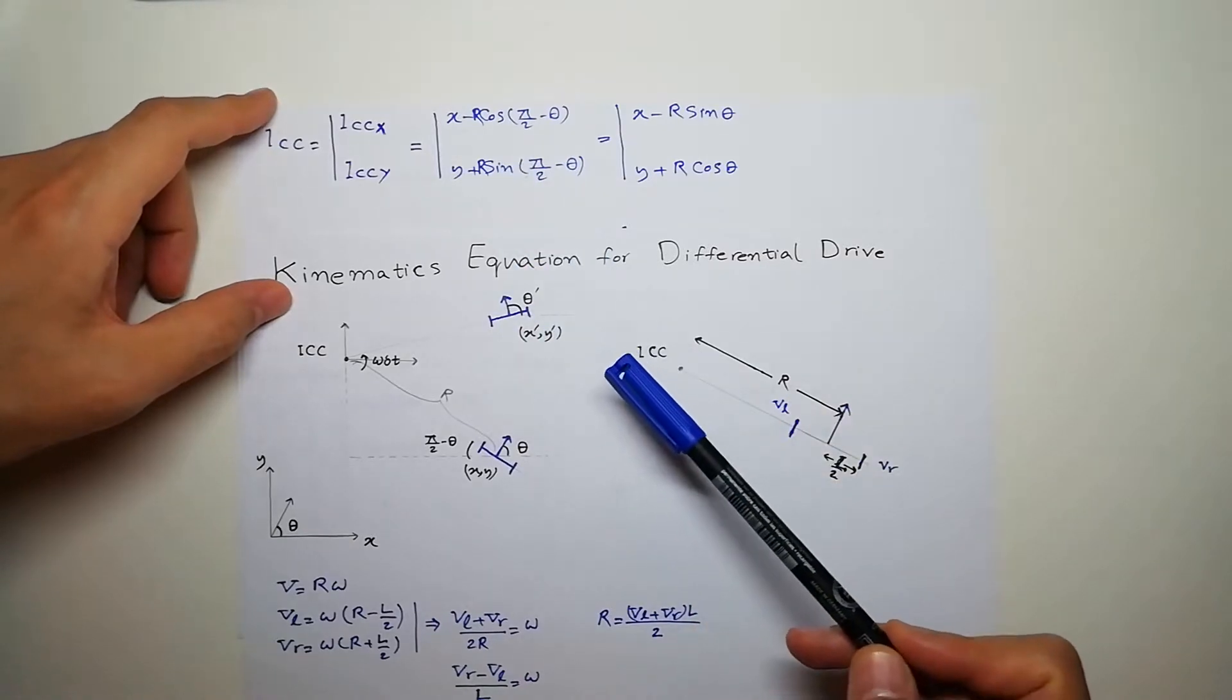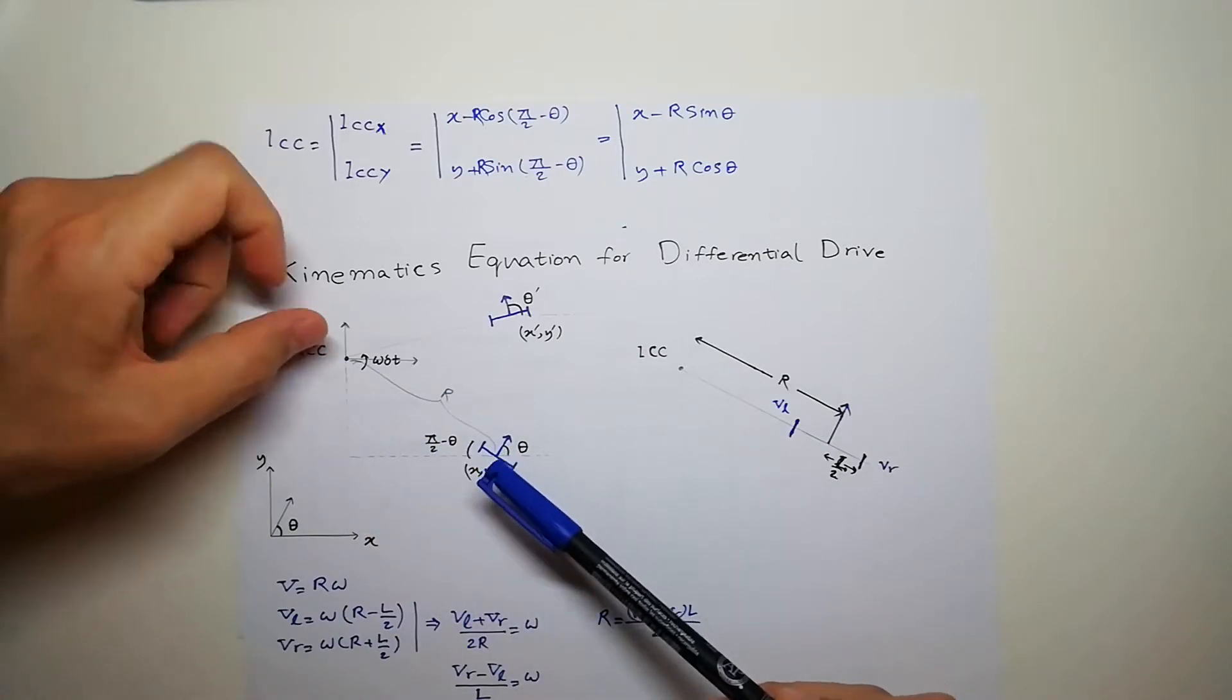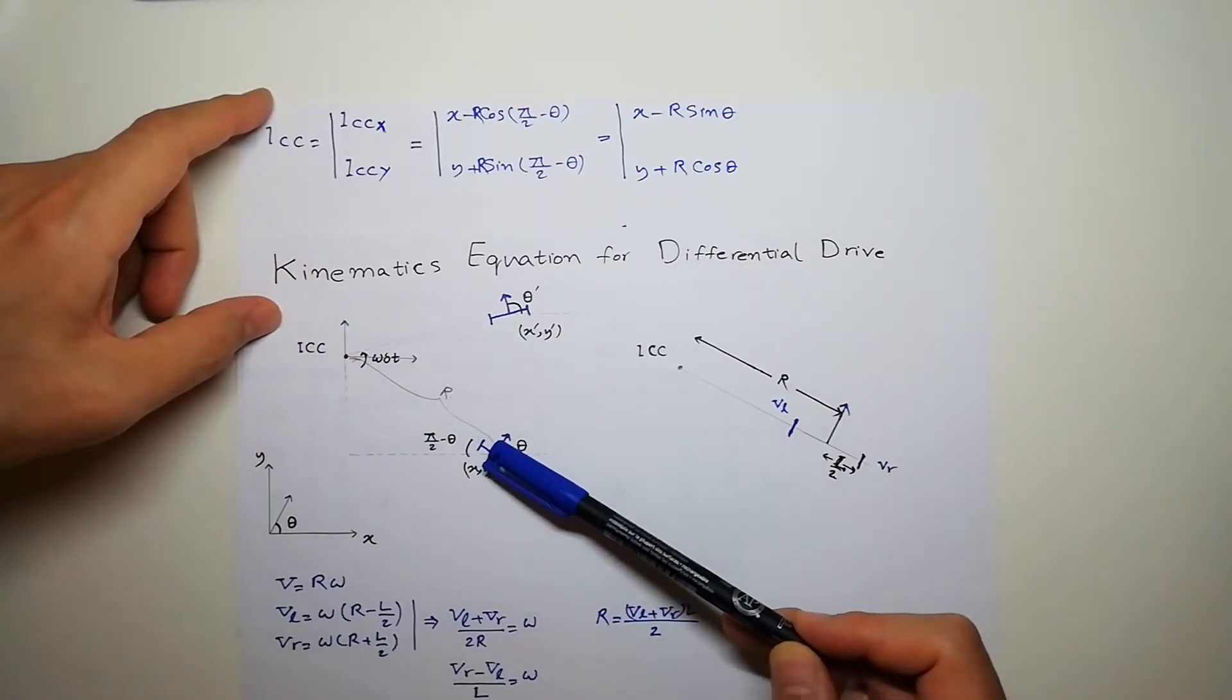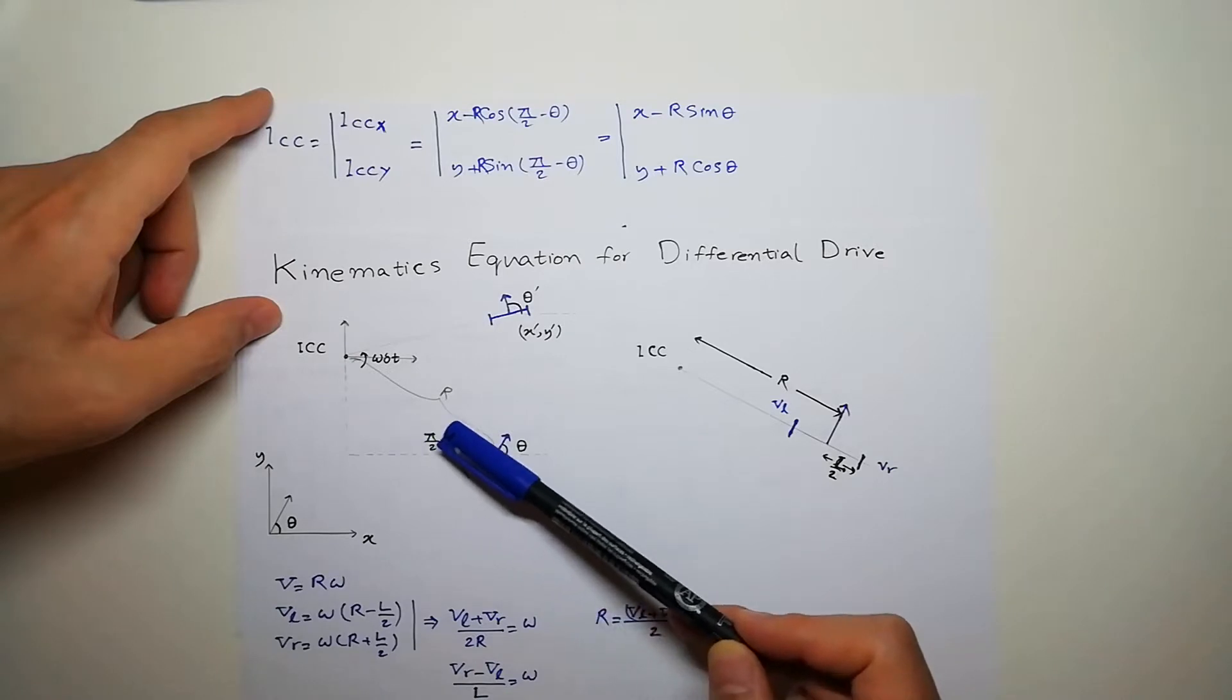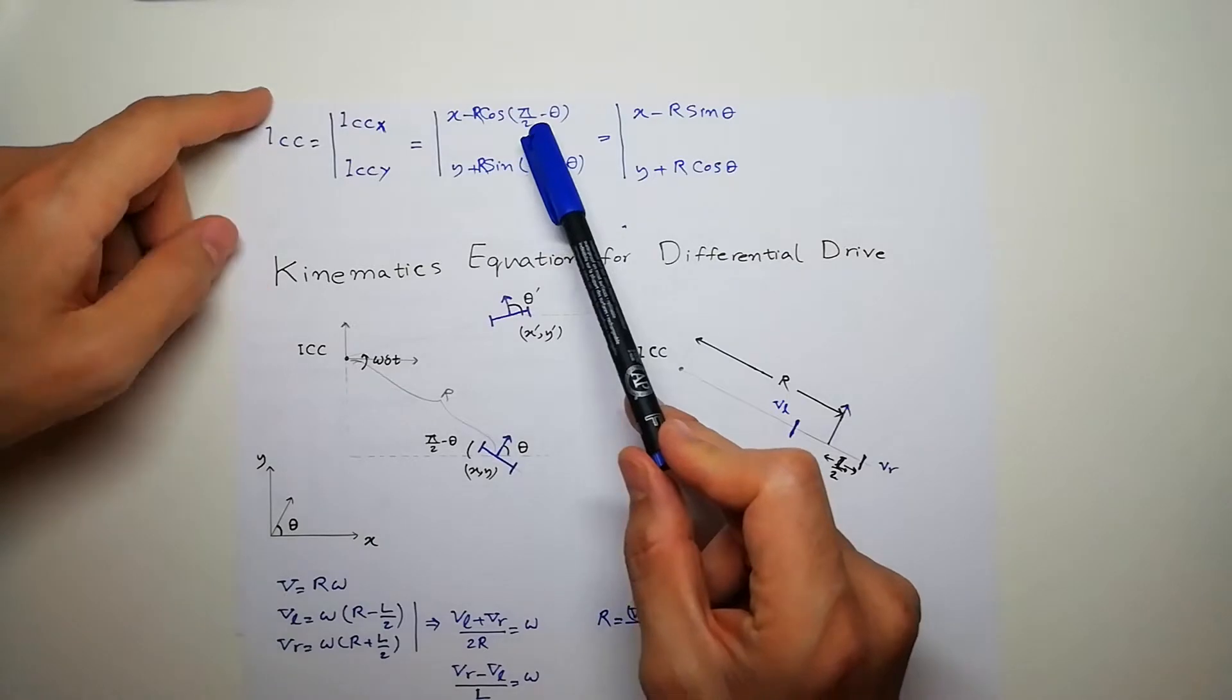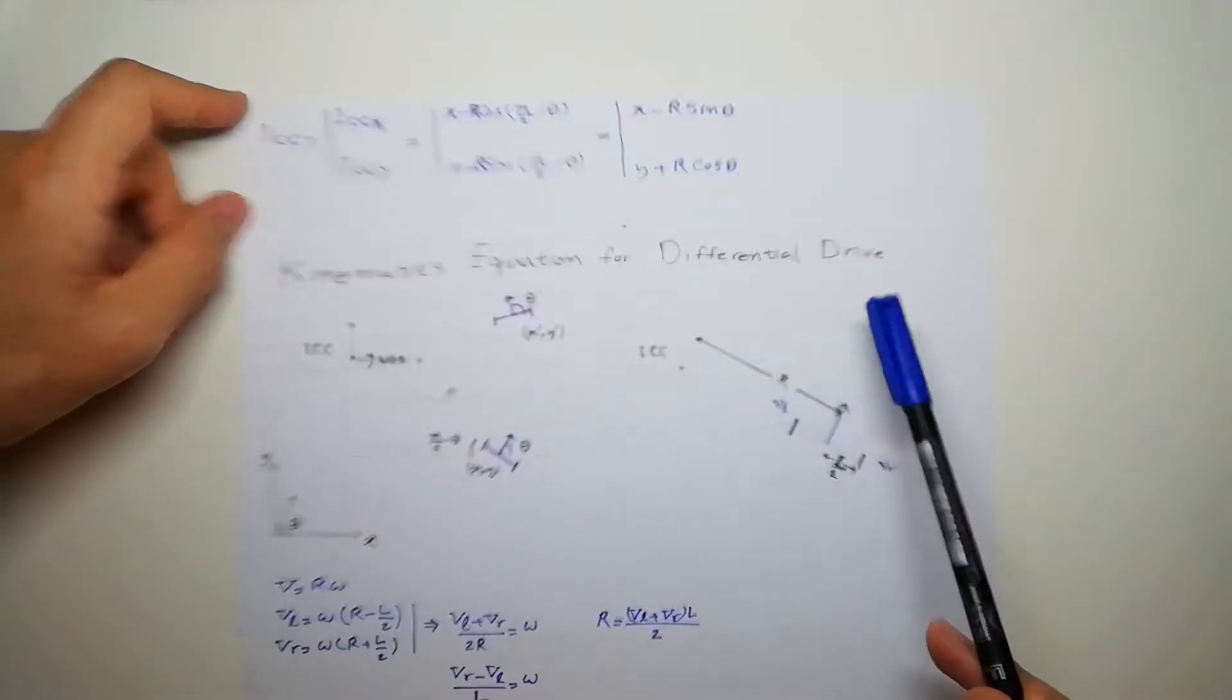And the Y of ICC is going to be Y of the robot plus this distance which is sine of this angle which we can write it as sine of theta and cosine of theta.